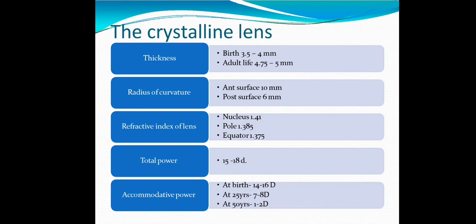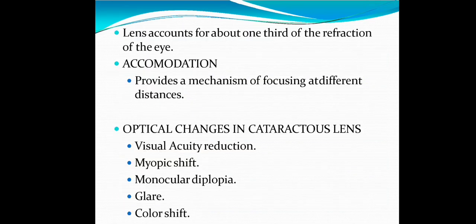Refractive index of lens: nucleus 1.41, poles 1.385, equator 1.375. Total power is 15 to 18 D. Accommodative power: at birth 14 to 16 D, at 25 years 7 to 8 D, at 50 years 1 to 2 D.